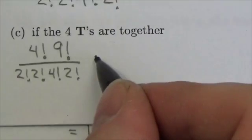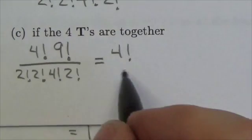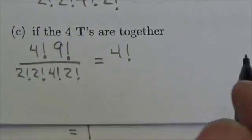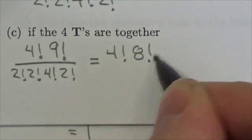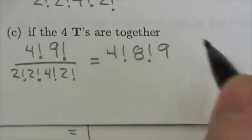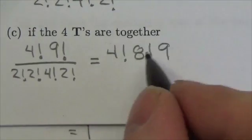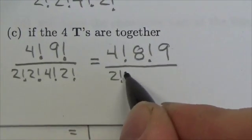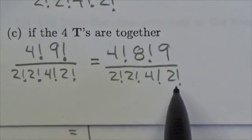Now another way of doing this is to treat that as 4!. Some people won't even include the 4!—they'll just treat the T's as one big letter. But another way of doing this is to say that there are eight letters left over times 4!. But there are then nine places that I could put that group of four T's. And then I would divide by the 2! × 2! × 4! × 2! to deal with the repetition of the letters.